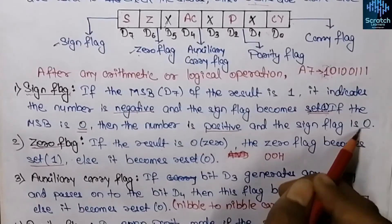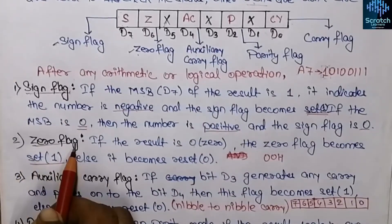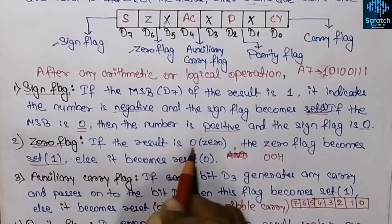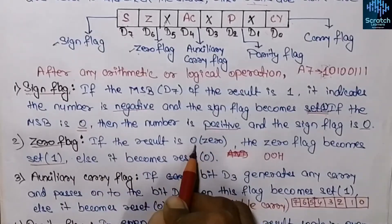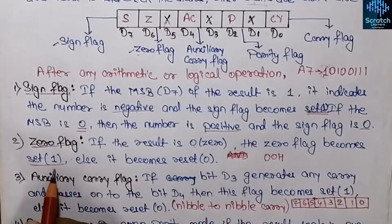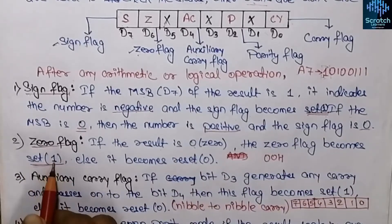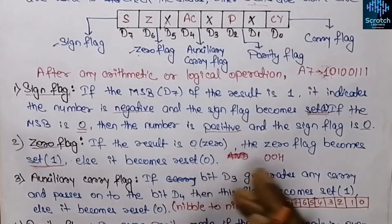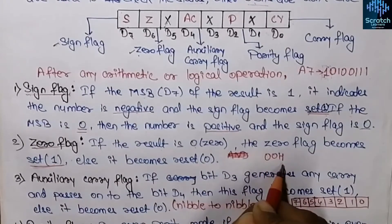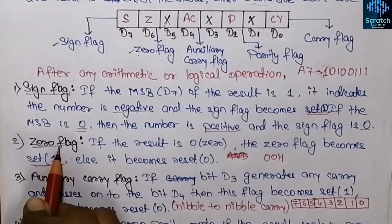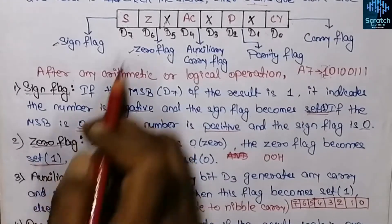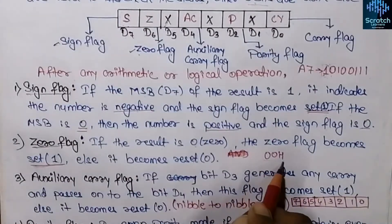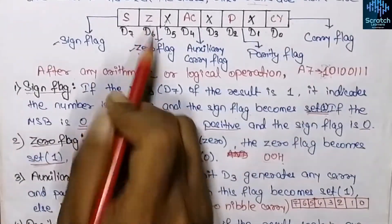Talking about the zero flag: after any arithmetic or logic operation, if the result is zero then the zero flag becomes set, meaning it will contain 1; otherwise it becomes reset. So if the result is 00 hex, the zero flag will contain 1 and we store 1 at bit D6. Otherwise the zero flag will contain 0.